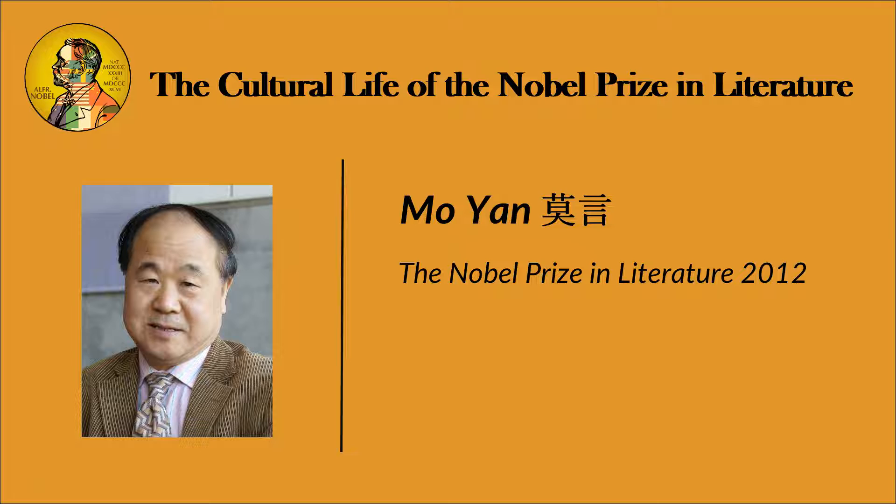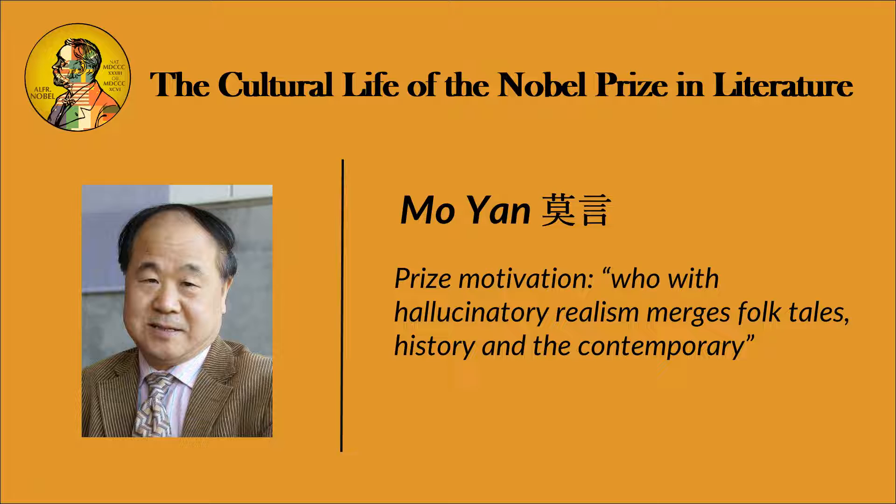Mo Yan's style, as opposed to Gao Xingjian, I would call maximalism. This maximalism is found, for example, in his deep description of scenes in a story and his characters — it's more colorful. That's why Zhang Yimou has made films based on Mo Yan, because the colors in Mo Yan's novels help the director to visualize the stories.